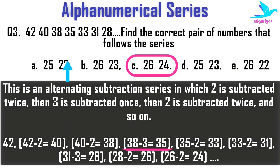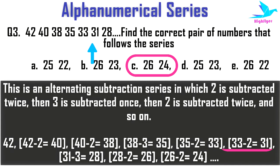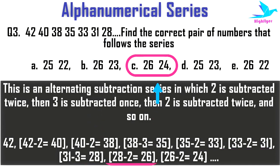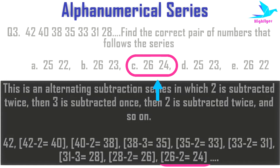Then 3 is subtracted: 38 − 3 = 35. Then 2 again: 35 − 2 = 33, 33 − 2 = 31. Then 3 again: 31 − 3 = 28. Then 2 again: 28 − 2 = 26, and 26 − 2 = 24. So the required numbers in the series are 26 and 24.